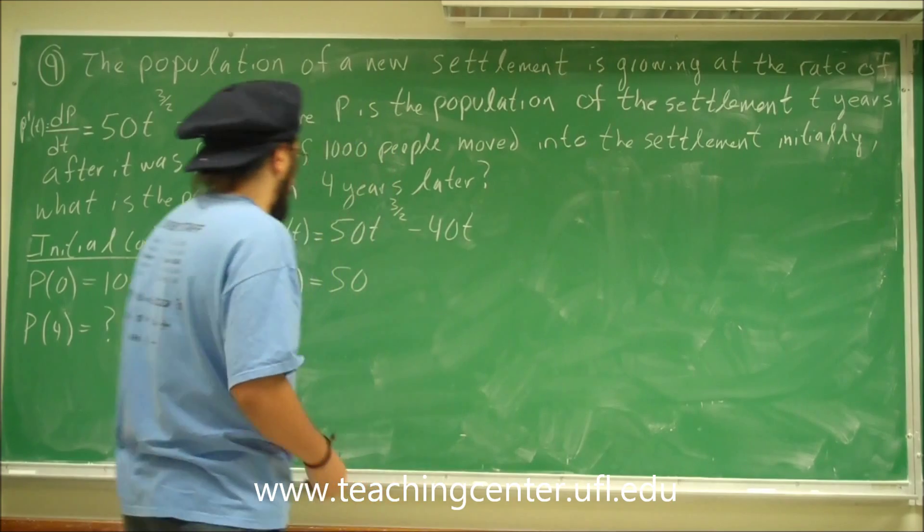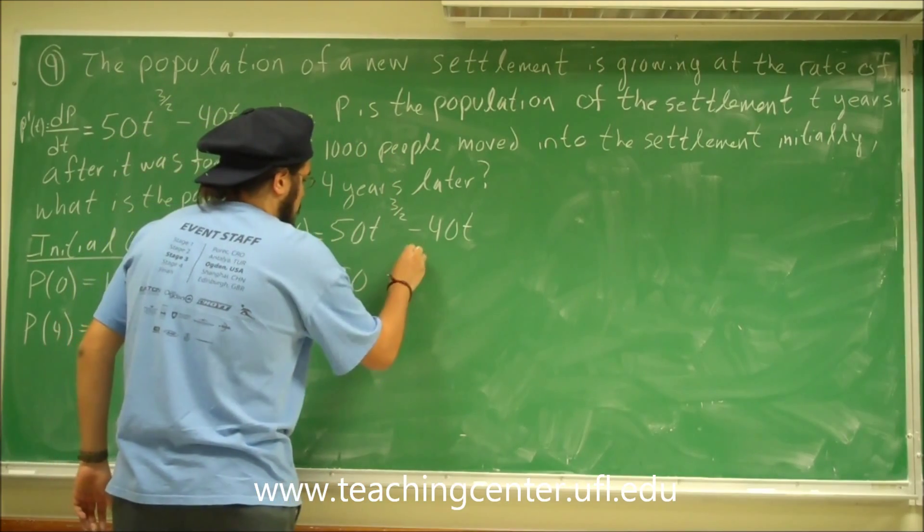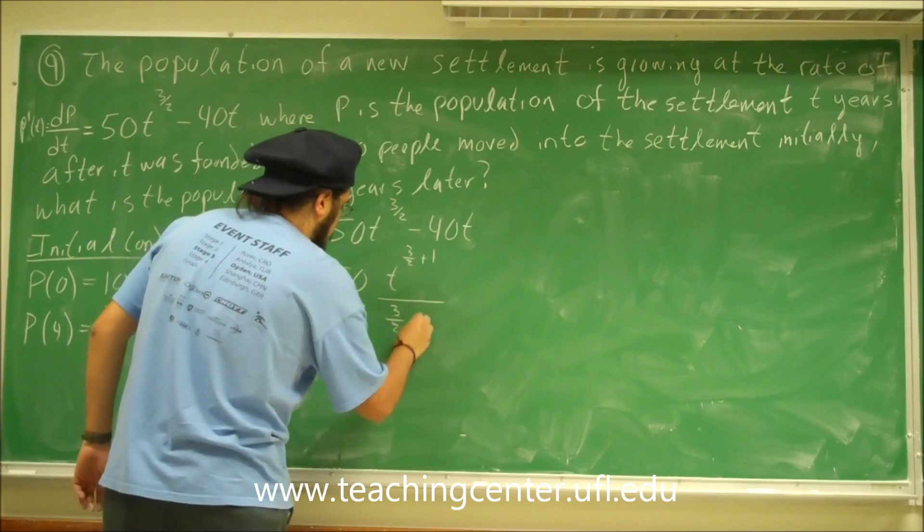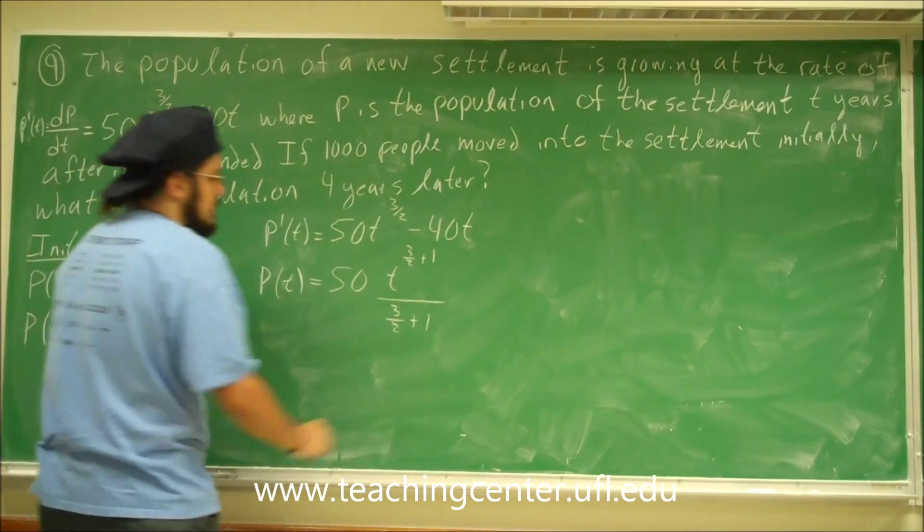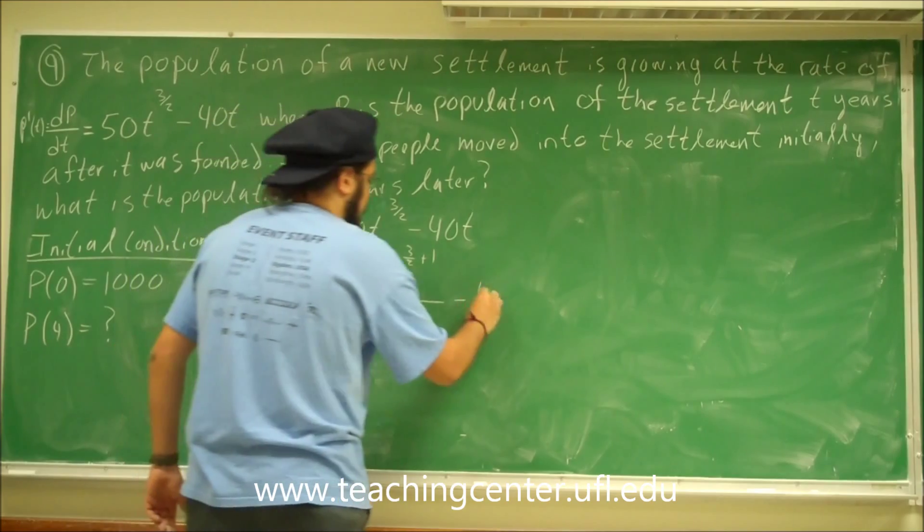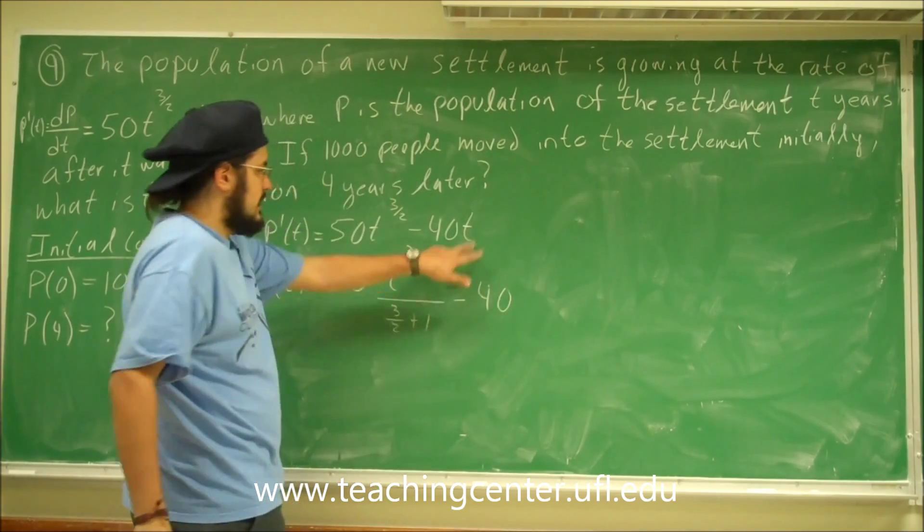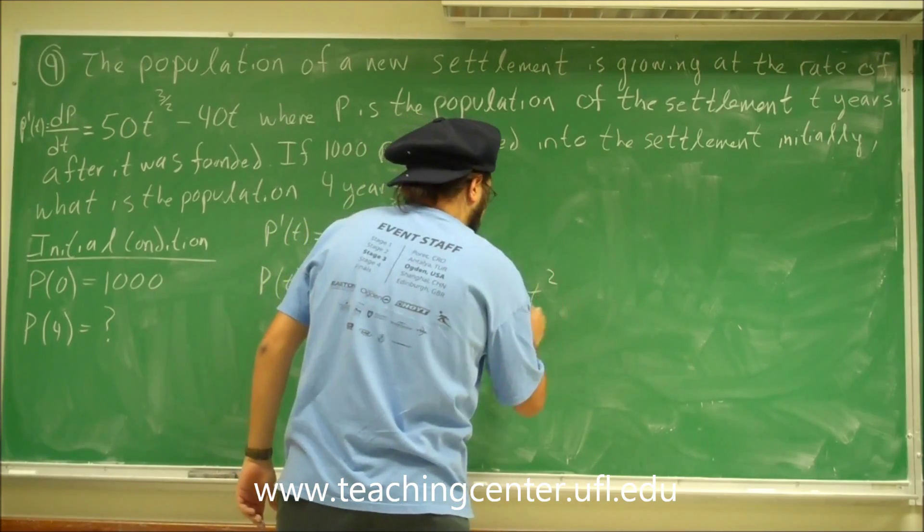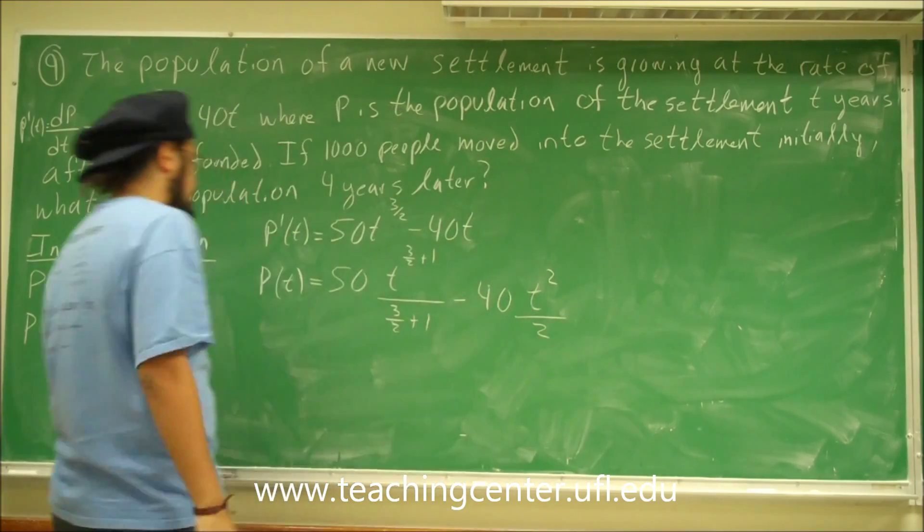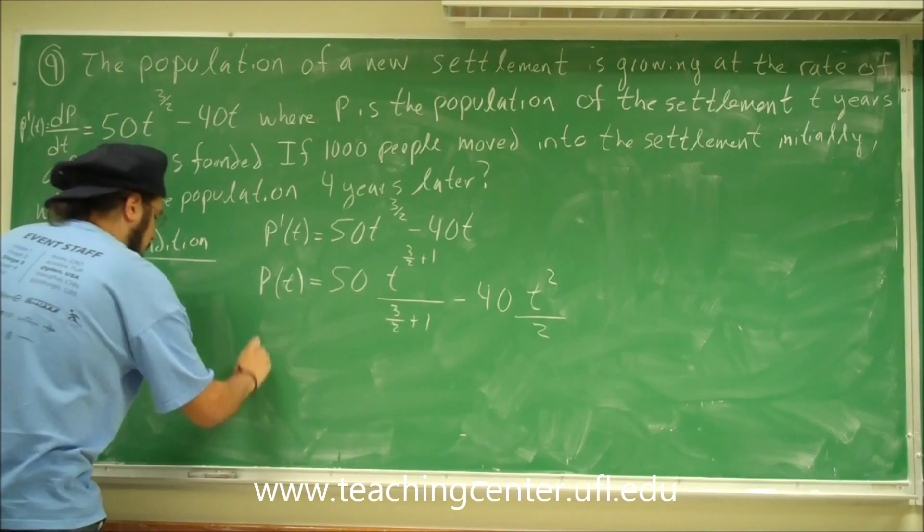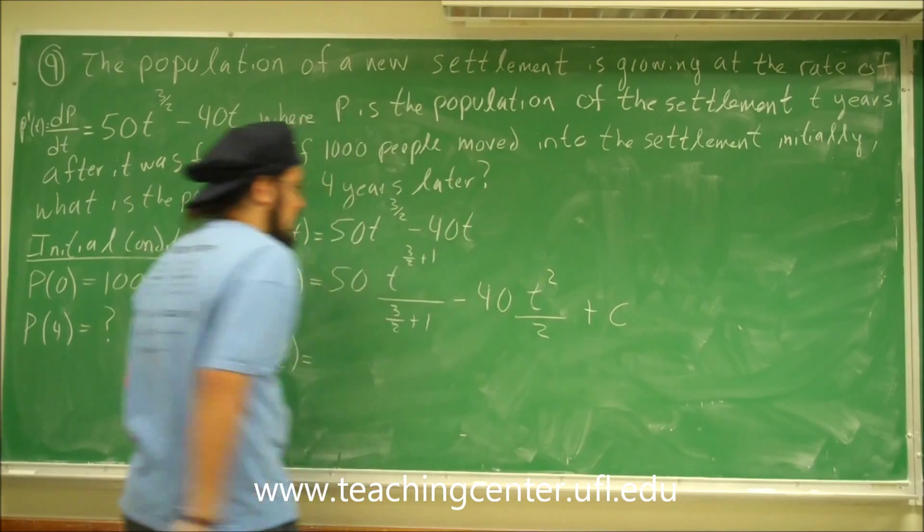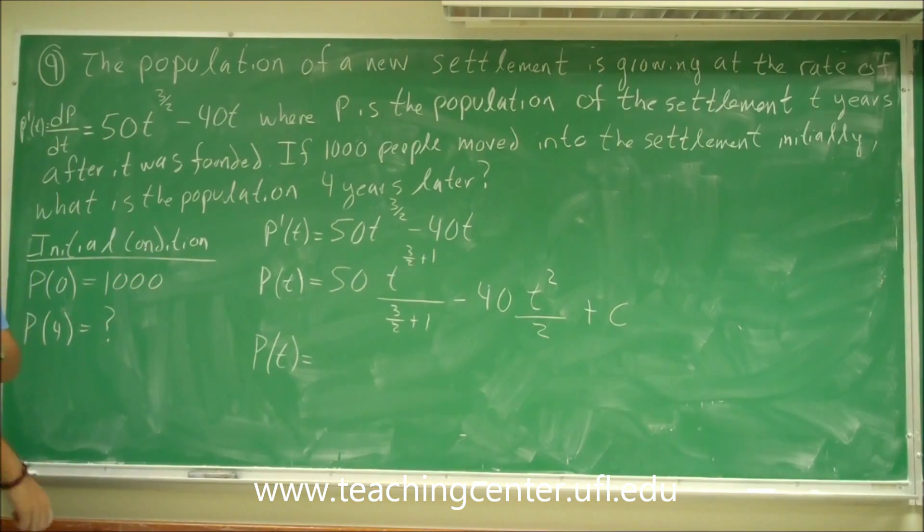So we have t to the 3 halves. That's going to be t to the 3 halves plus 1 divided by 3 halves plus 1, minus 40 is another constant, so let's bring the 40 out. t to the 1, if we apply the rule, we'll get t squared divided by 2. So far so good. So now we have p(t), by the way, plus c, right? Plus that constant, since we're taking the antiderivative.